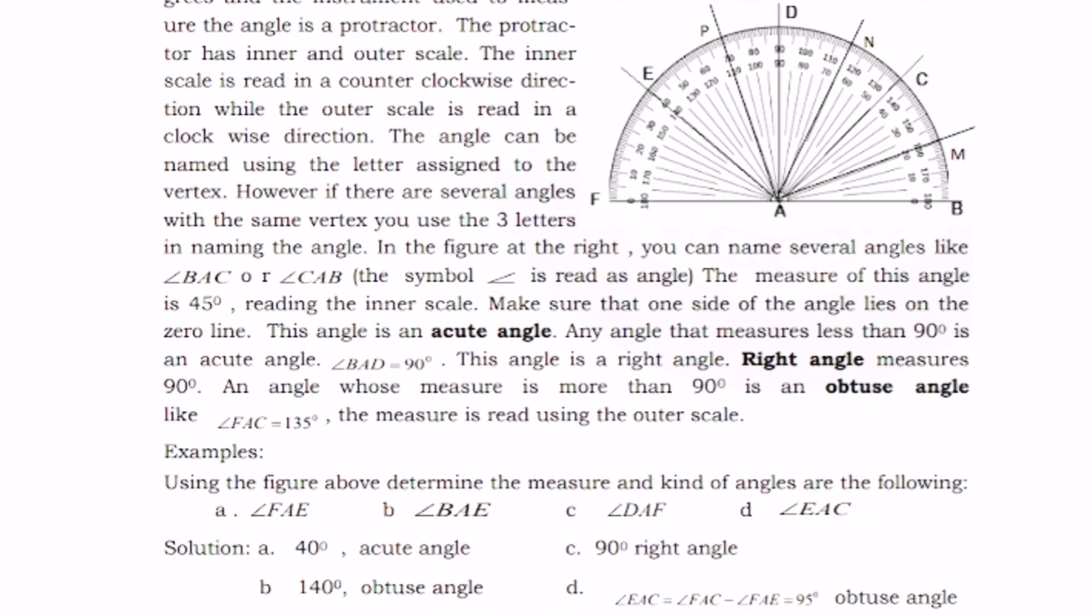Examples: using the figure above determine the measure and kind of angles are the following. Angle FAE is 40 degrees, an acute angle. Angle BAE is 140 degrees, an obtuse angle. Angle DAF is 90 degrees, a right angle. Angle EAC is an obtuse angle.